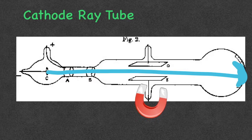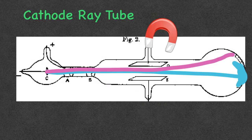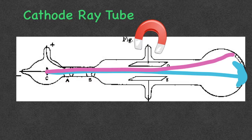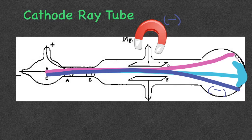He realized that when he put a magnet up close to a plate, the beam would actually veer away from the magnet. He moved the magnet to the other side, and again the beam would veer away. He knew that the magnet had a negative charge, and that like charges repel and opposite charges attract. So if the magnet caused the beam to push away, this beam of energy must also be negative.